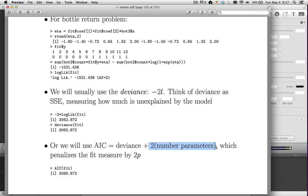So if we think about our bottle return problem, we had two parameters in there. We had a slope and an intercept. So two parameters times two is four. Our penalty is four. We're going to take this 3062 and add four to it. There's an AIC function in R. So if we add four to this, we get 3066.872. So that's our AIC.